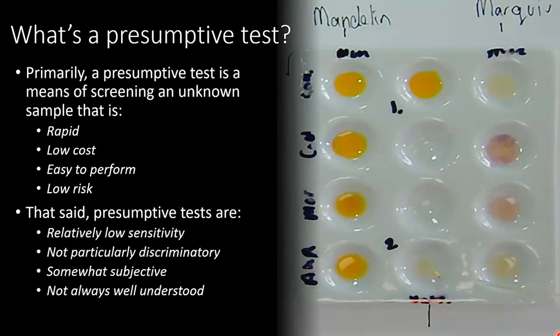That all said, presumptive tests are relatively low sensitivity, not particularly discriminatory, which means they suffer from false positives, and are somewhat subjective. If you look over here, we can see a negative result which looks pale yellow, and a positive result which looks somewhat purple. But the bottom two samples are harder to classify — one appears pale purple and the other has a slight purple tinge, making it difficult to attribute whether those would be considered positive or negative results. Finally, they're not always well understood, meaning the chemistry concepts underpinning them are not always well known.